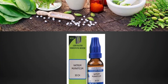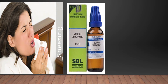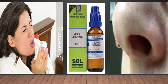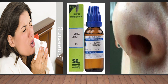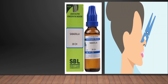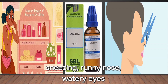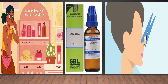The homeopathic medicine Natural Immune can be taken when there is violent sneezing, especially in the morning, along with runny nose where the discharge is thin and watery, followed by nose block. The second medicine, Sabadilla, can be taken when a person is oversensitive to strong smells along with sneezing, runny nose, watery and red eyes, aggravated by strong odors and perfumes.